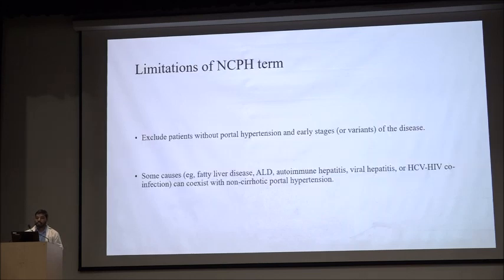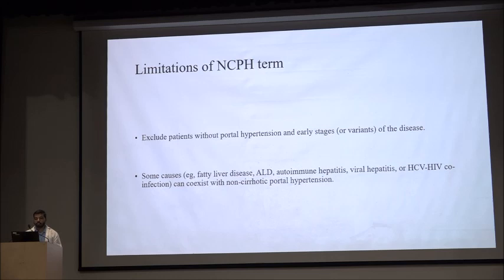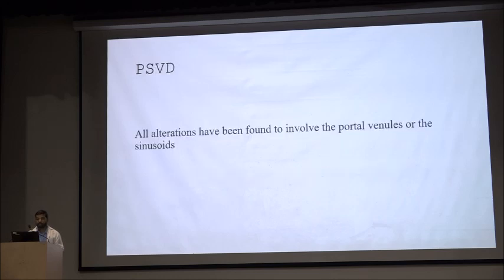The limitation of the NCPH term was that it excluded patients without portal hypertension and those in early stage of the disease. Also, it excluded patients with fatty liver disease, ALD, autoimmune, and viral hepatitis, which can coexist with non-cirrhotic portal hypertension. The term PSVD was coined because alterations have been found in the portal vein and the sinusoids — hence, portal sinusoidal vascular disease.